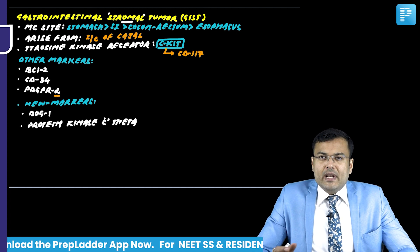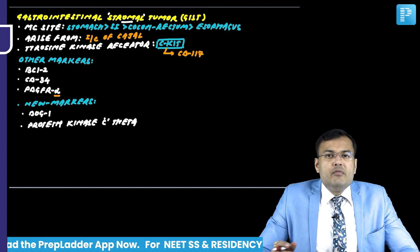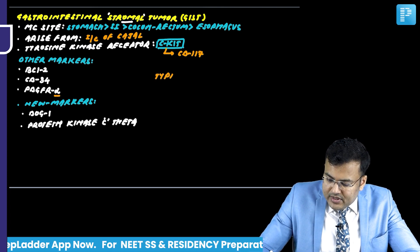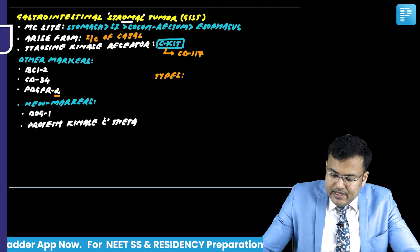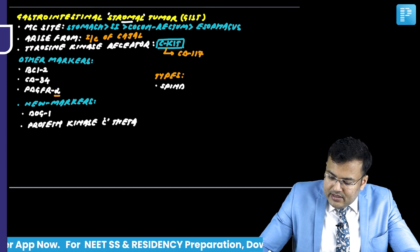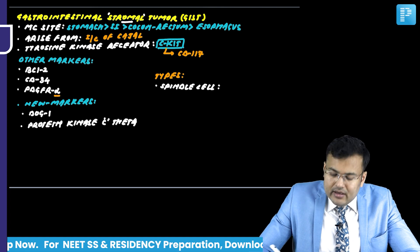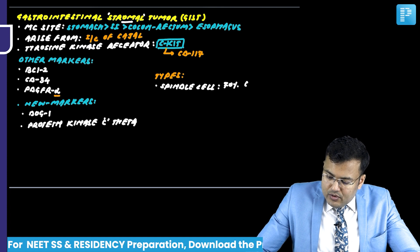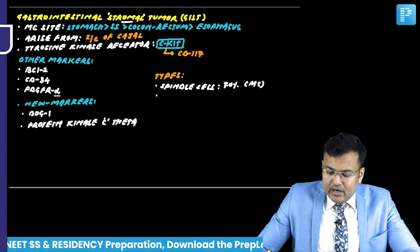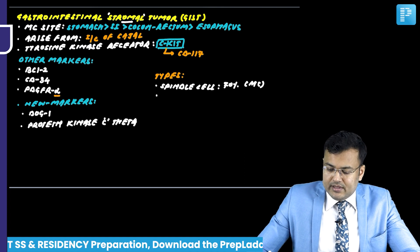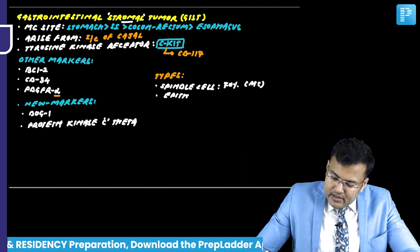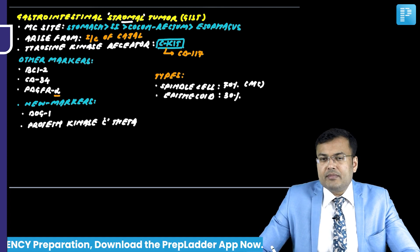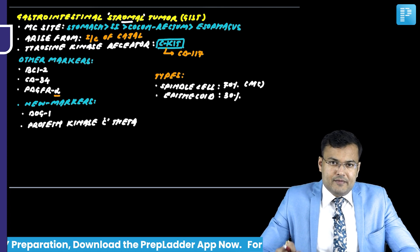GIST is of two varieties: spindle cell and epithelioid. The spindle cell variety is most common, accounting for 70% of cases. The epithelioid variety accounts for 30% of cases.